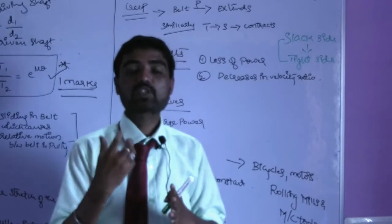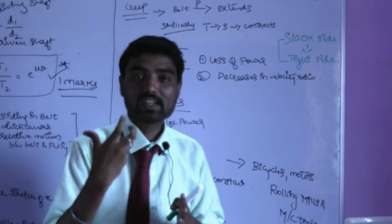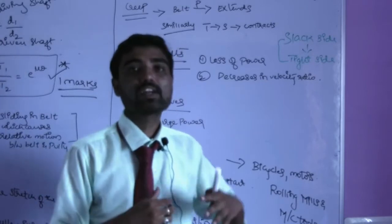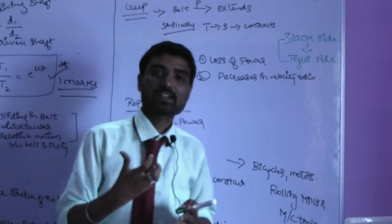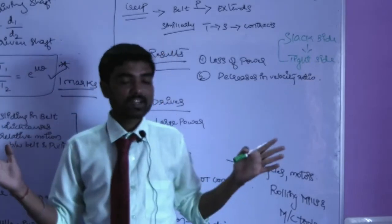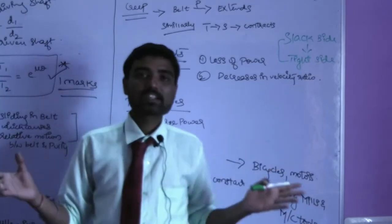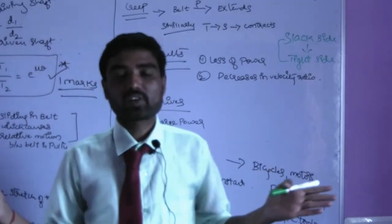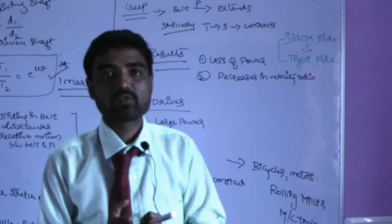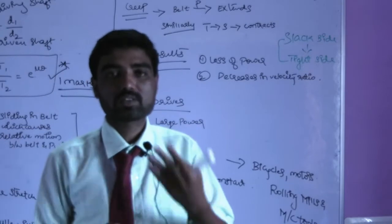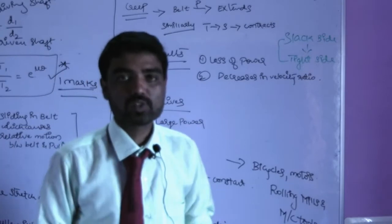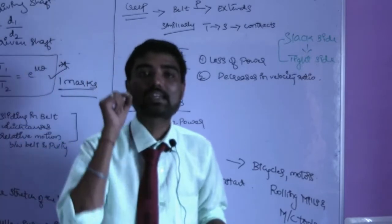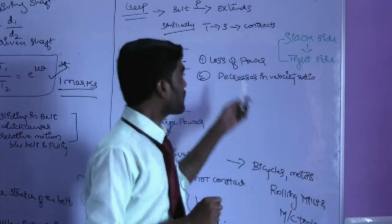The creep arises, which is going to cause a relative motion. Relative motion is created by the extension of the belt or contraction of the belt, which causes relative motion. Hence, it is called creep.